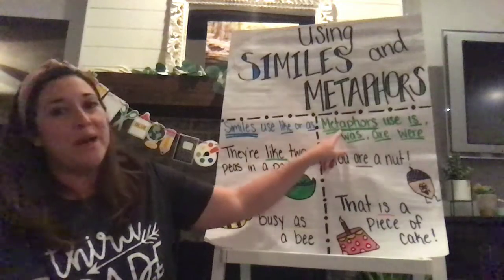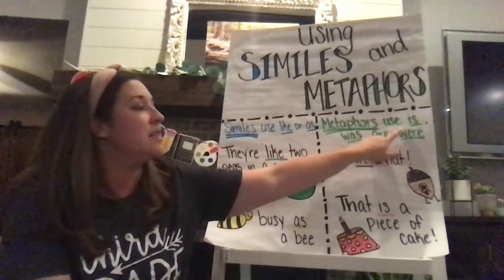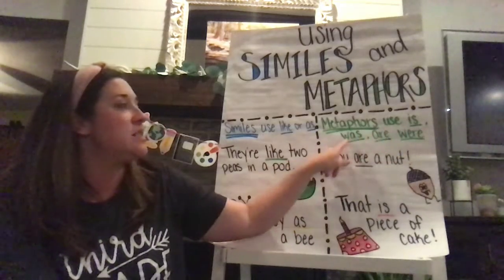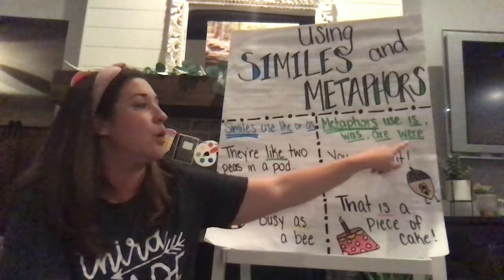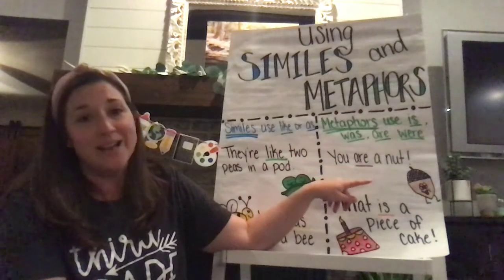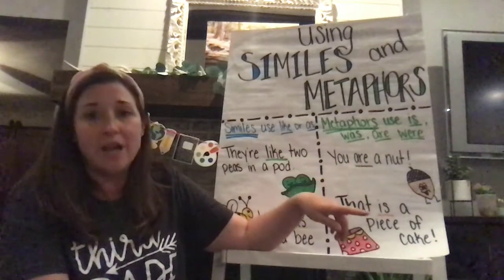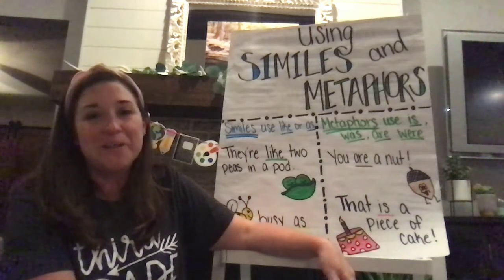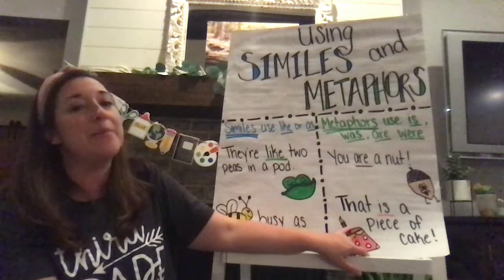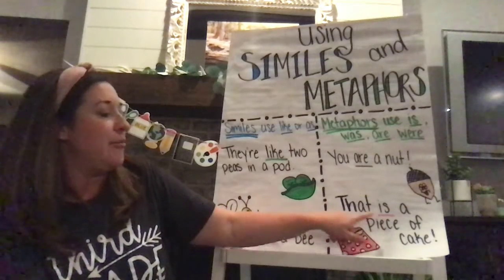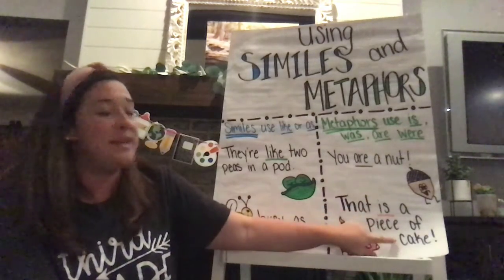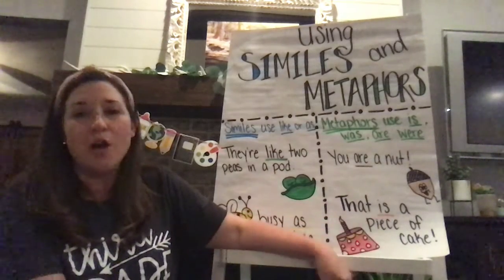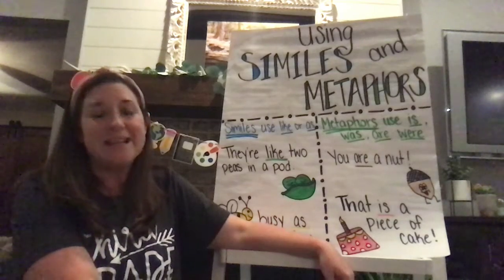If we look at metaphors, this is where two things are compared using is, was, are, or were. For example: you are a nut — comparing you to a nut with the word are. That's going to describe someone as silly or goofy. Another example: that is a piece of cake — that and piece of cake being compared with the word is. This is oftentimes used to describe something being easy.